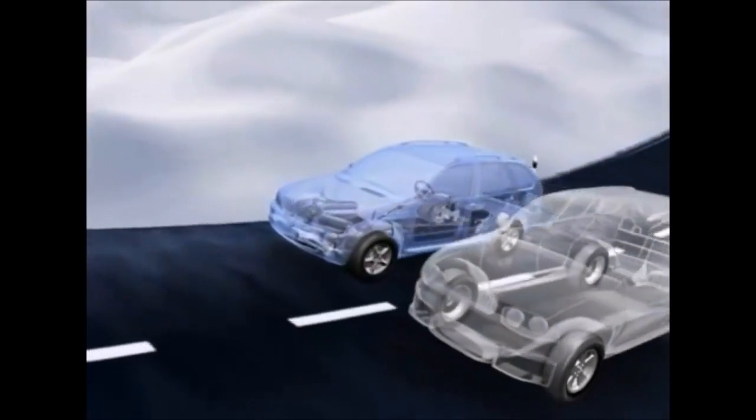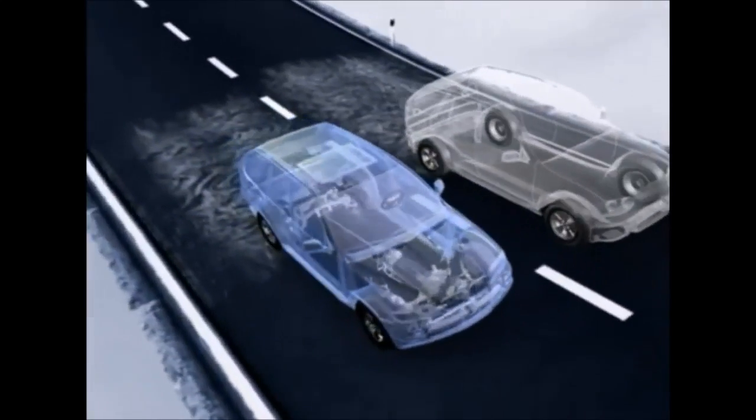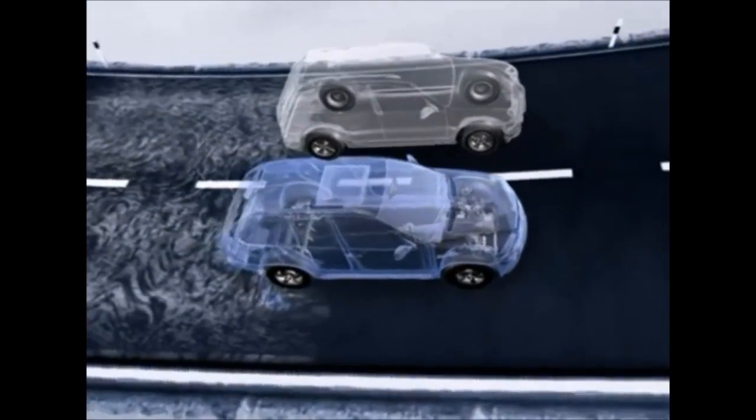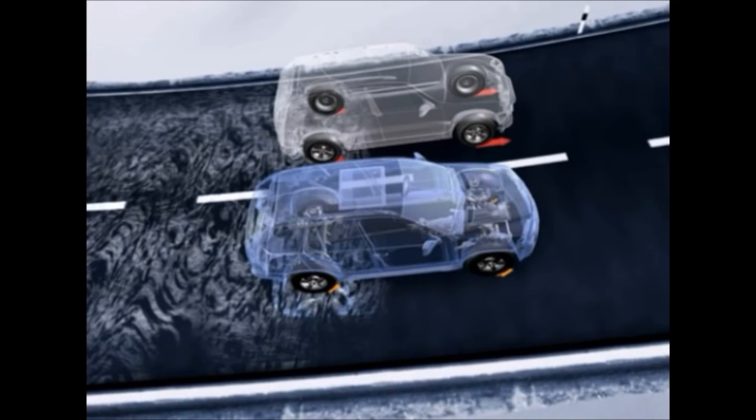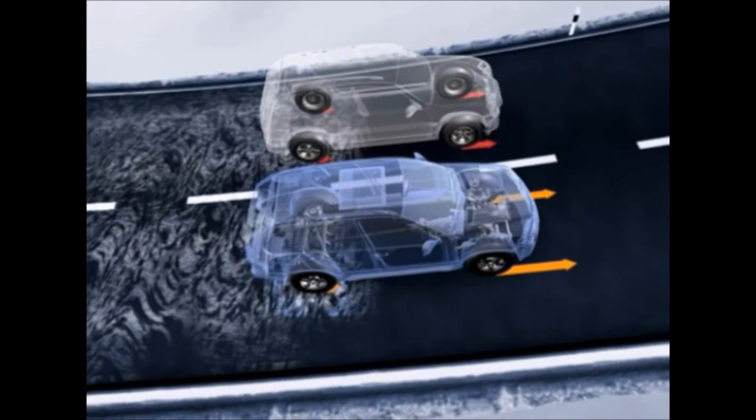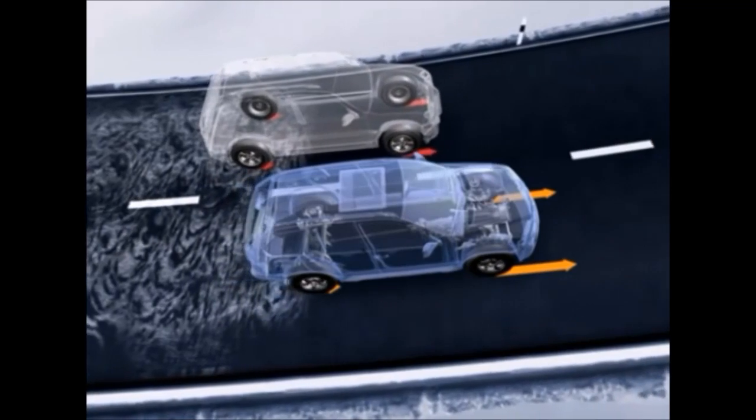X-Drive is able to variably distribute driving force. From the first touch of the accelerator, X-Drive regulates power distribution and brings the complete engine power onto the front axle and thus onto the road proactively. In other words, before the wheels of the rear axle even start to spin on the ice.